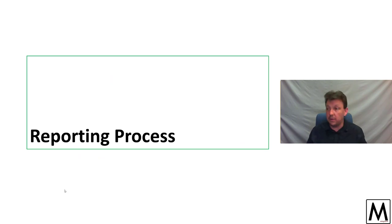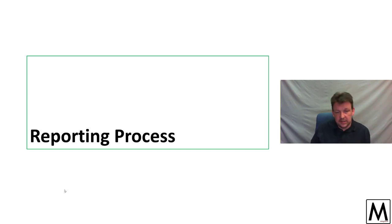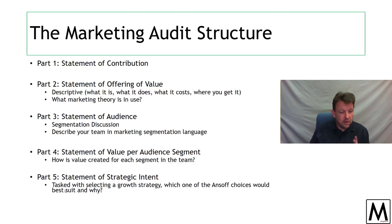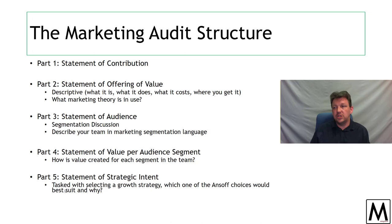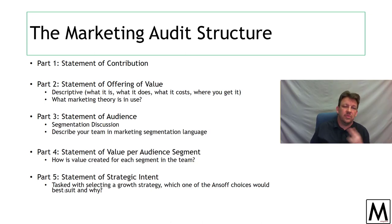Let's talk about how we're going to write the assignment up — the documentation process. In the reporting process, there are five parts, four of which you score points on and one which just has to be there: Statement of Contribution, Statement of Offering, Statement of Audience, Value per Audience, and Strategic Content. That's your overview summary.